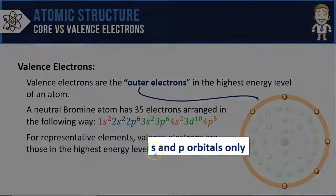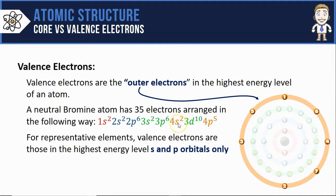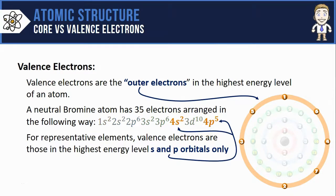The second important part is where it says s and p orbitals only. So in my fourth energy level here for bromine, I have s's and p's. That means they will both count towards the valence electrons. These seven electrons are the valence electrons in bromine's configuration.